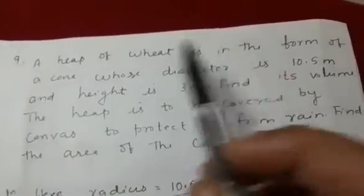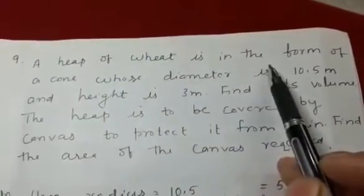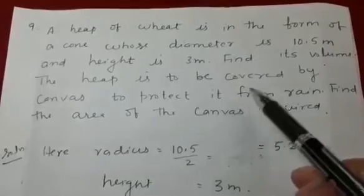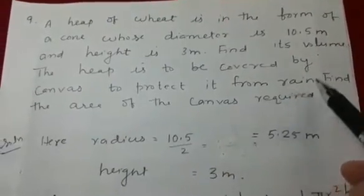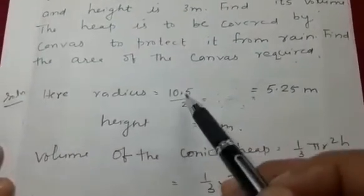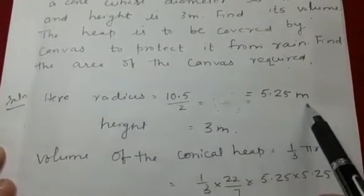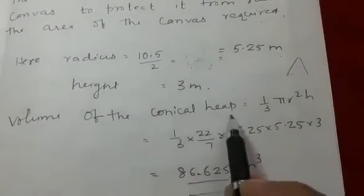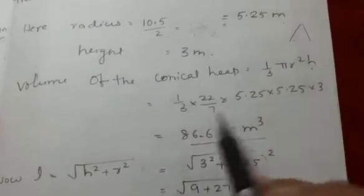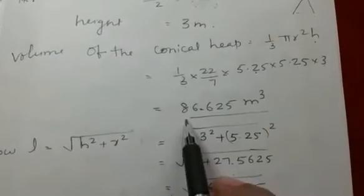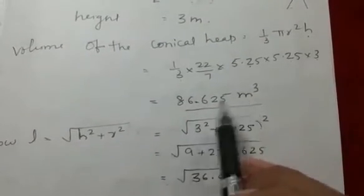Let's discuss the 9th question. A heap of wheat is in the form of a cone whose diameter is 10.5 m and height is 3 m. Find its volume. Radius = 10.5 / 2 = 5.25 m, height = 3 m. Volume of the conical heap = 1/3 × 22/7 × 5.25 × 5.25 × 3 = 86.625 m³. This is the volume of the heap.